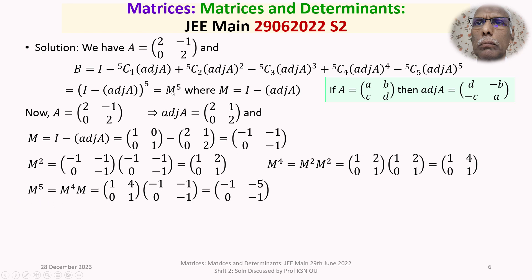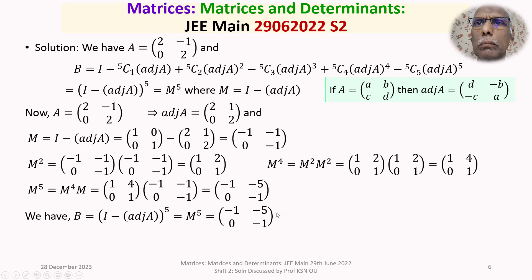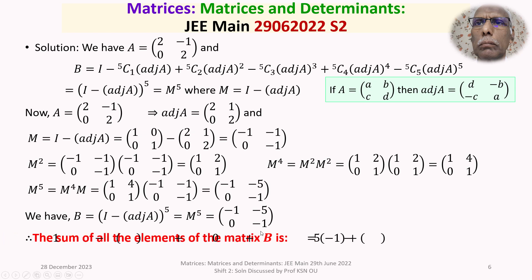Thus we have obtained M to the power 5, and since B equals (I minus adjoint of A) to the power of 5, we have B equals M to the power 5, which is [-1, -5; 0, -1]. The sum of all the elements of matrix B is minus 1 plus minus 5 plus 0 plus minus 1, which equals minus 7.